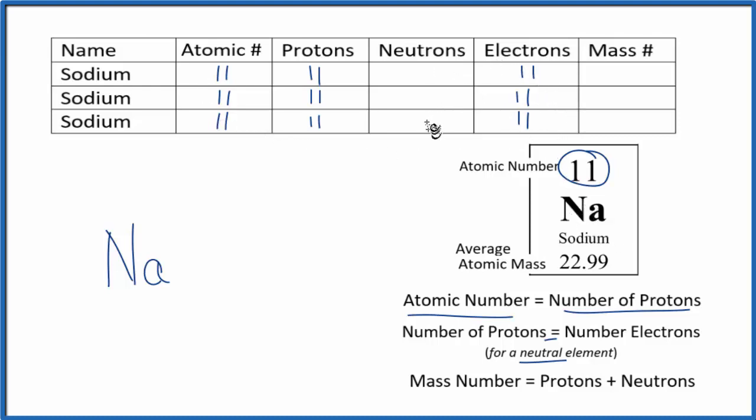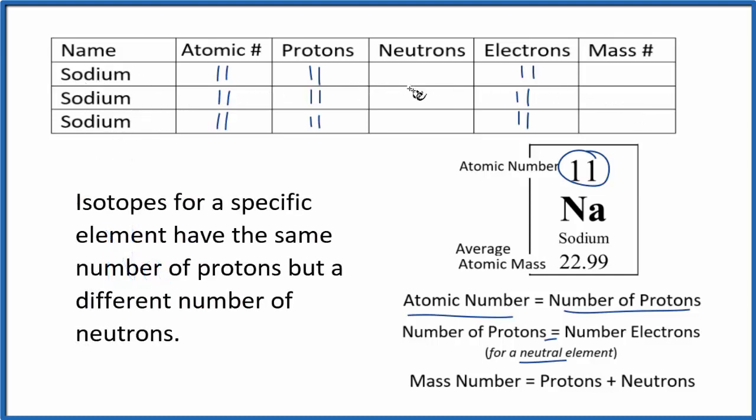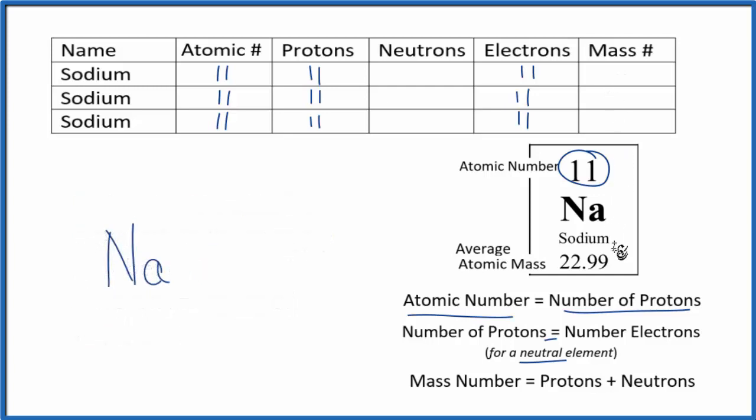Let's look at neutrons and mass number. So the different isotopes of sodium, the only thing that's different is they have different numbers of neutrons. And since protons plus neutrons gives us mass number, they'll have a different mass number also. Usually we're given either neutrons or mass number when we complete these tables. If you're not given it, go to the periodic table.